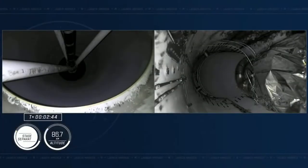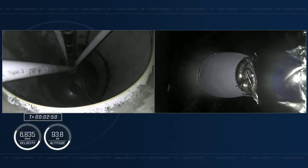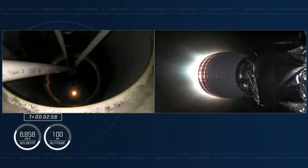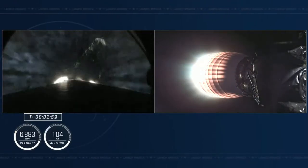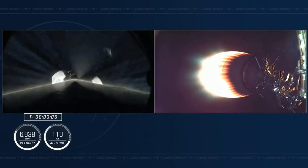Stage one throttle down. The nine Merlin engines starting to throttle down. And standing by for MECO. And MECO. Stage separation confirmed. So MECO, stage separation is confirmed. We see that second stage engine light. We're in two alpha, the second abort mode. The second stage is lit, continuing to carry the crew four astronauts onto orbit.